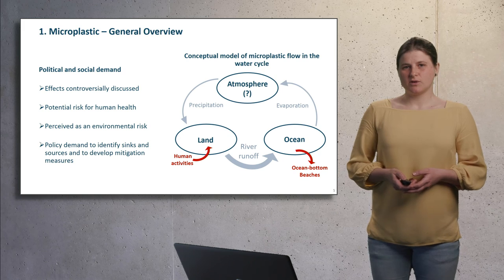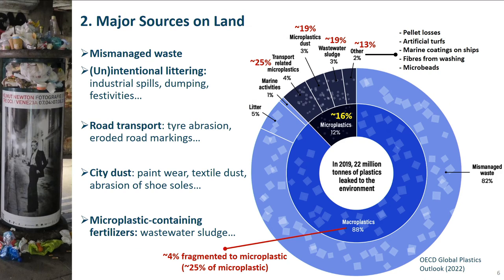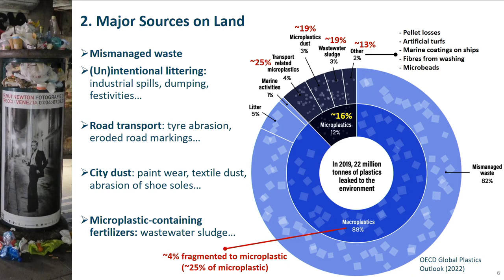Let's start with a look at the sources on land. Within this figure, the global leakage of micro and macroplastic to the environment is shown, which was estimated to be 22 million tons in 2019. One major emission route for plastic on land is mismanaged waste and unintentional or intentional littering — illegal dumping or spills from industrial sites, open-air events such as New Year's Eve, or litter from barbecues in summer. Focusing only on the highlighted microplastic numbers, the fragmentation of this litter contributes to about 25% of all microplastic inputs to the environment.